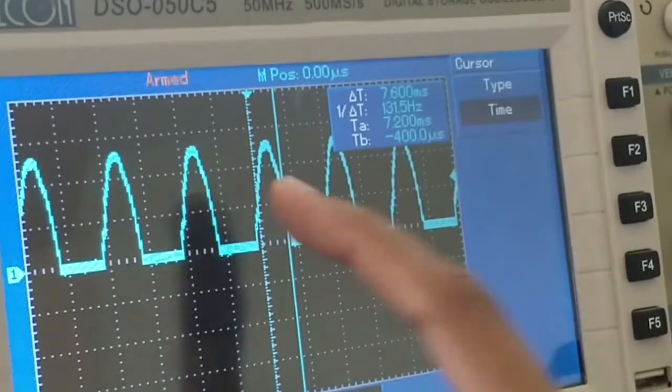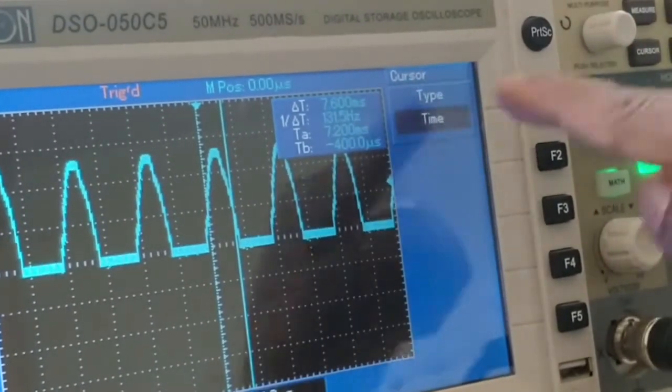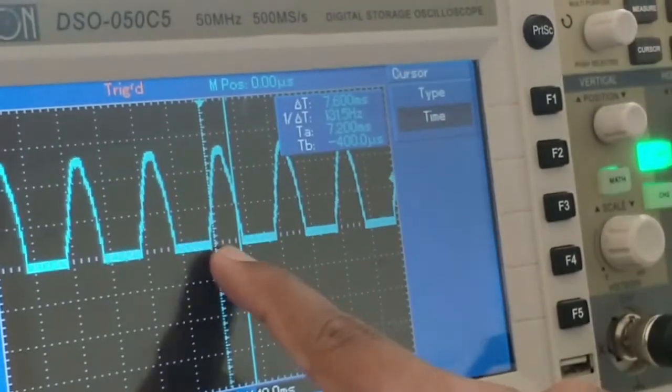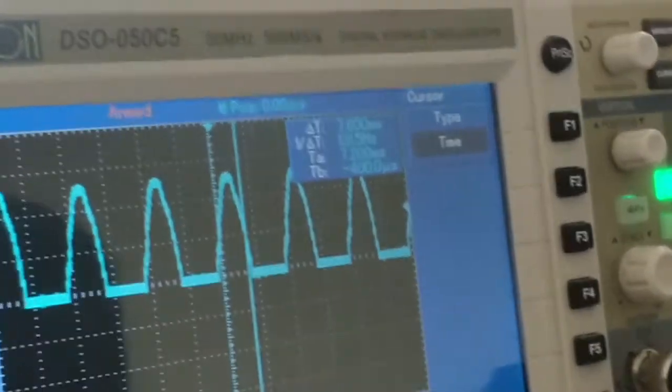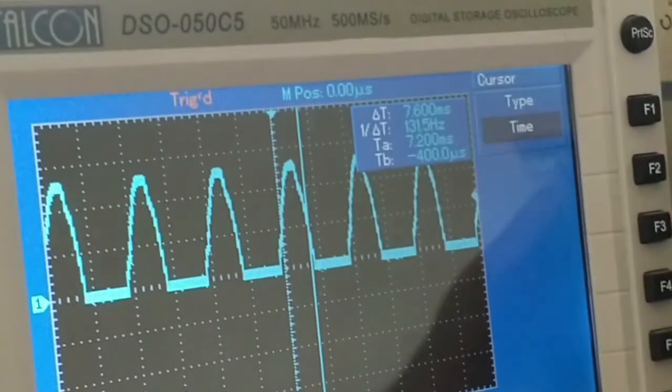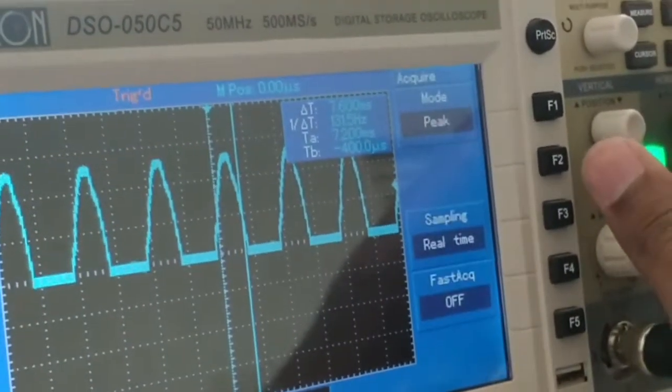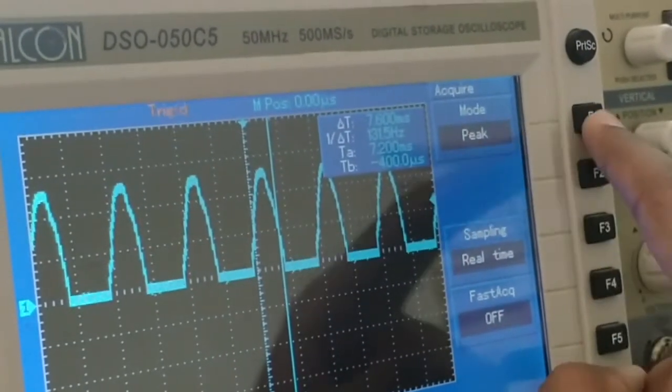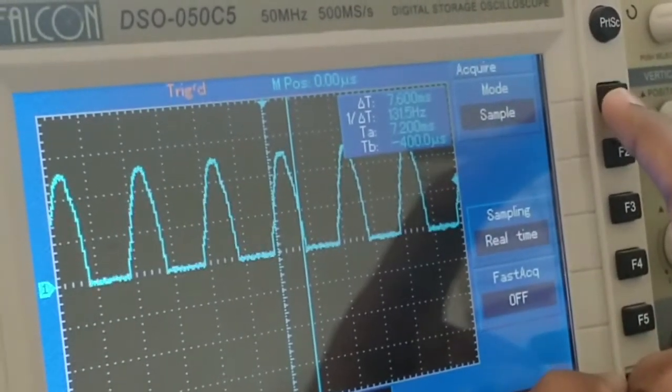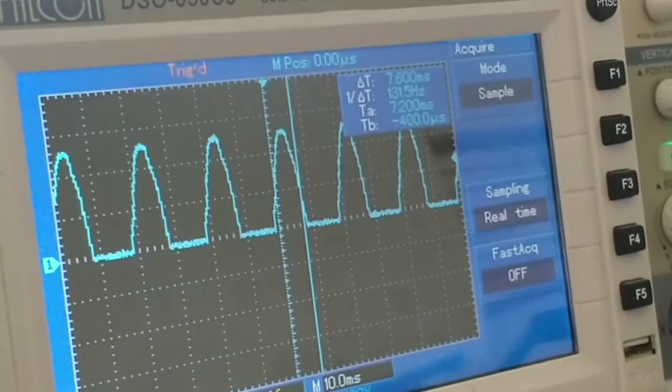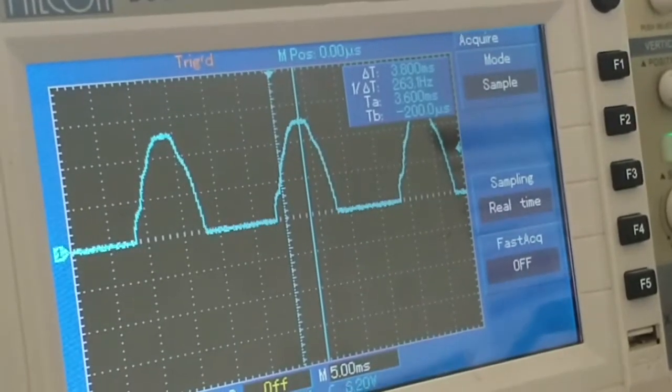By varying the DRB, you will see a change in the output. We have pressed measure and then set it to time. Using this cursor, we will be arranging this to measure the time period. To get a clear waveform, press acquire, and then in the mode press function one until you get sample—a clear single line waveform.